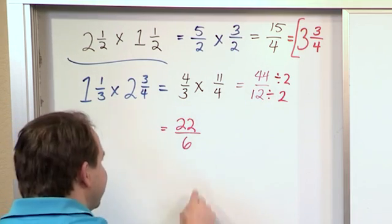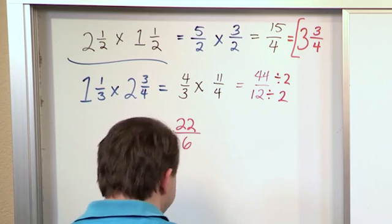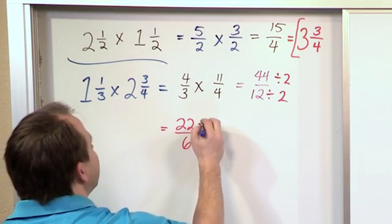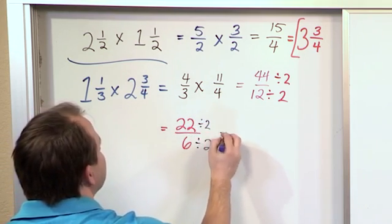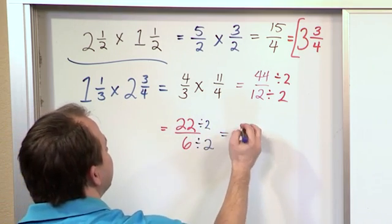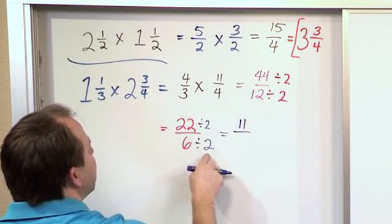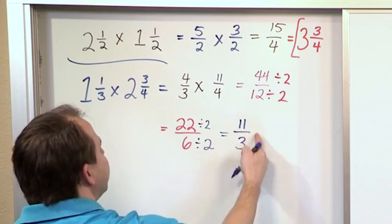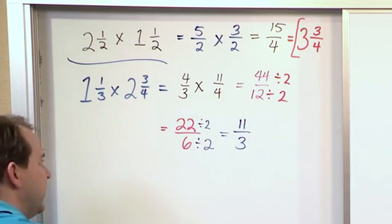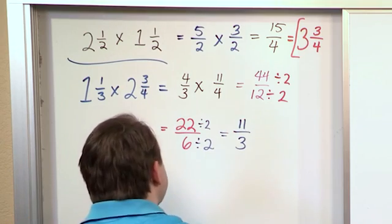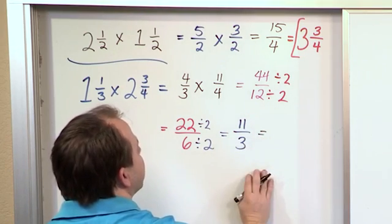But we notice again that this is still an even number and an even number. So we can again divide the top by 2 and again the bottom by 2. 22 divided by 2 is 11. 6 divided by 2 is 3. So we fully simplified this guy, but we have noticed also that it's improper. So let's take a minute to convert it back to a mixed number.